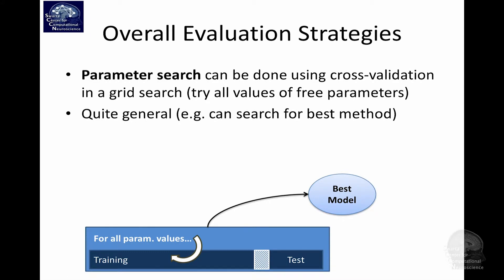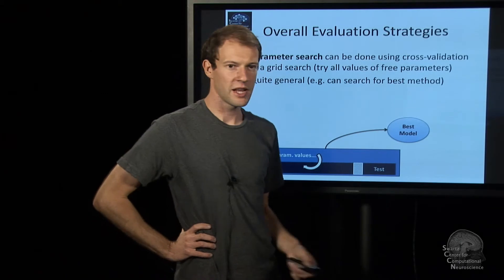Because cross-validation gives you a quantity like the average misclassification rate. And so that's very general, because it works essentially with any kind of parameter, although it can be slow if you have too many choices to go through. And so on the training set, you can cycle through all the parameter values, and pick out the model that ended up working best.